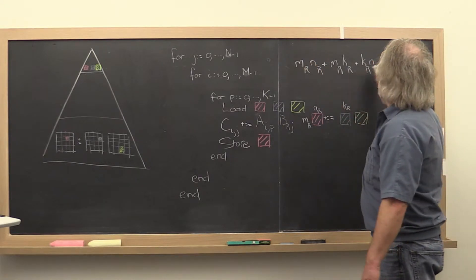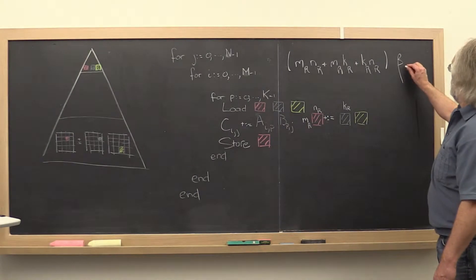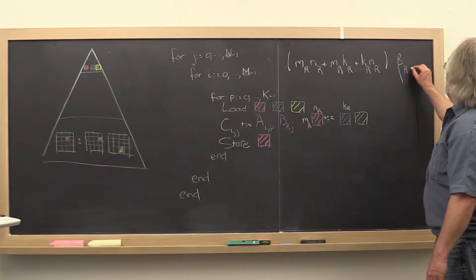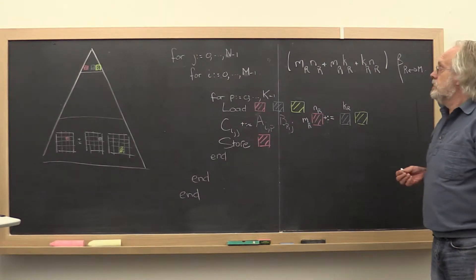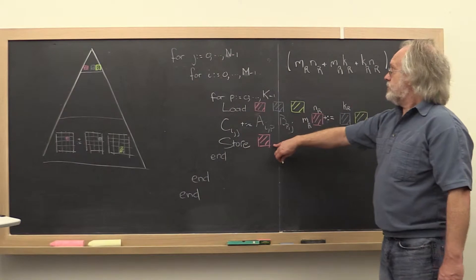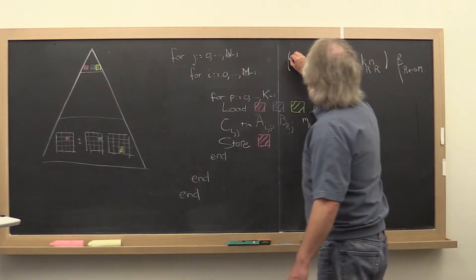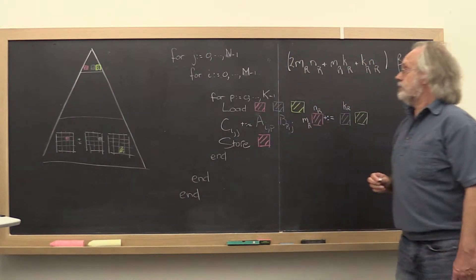And we need to multiply that times the cost of moving one double around. And that's r beta rm. But then we also have to store the block of C. And therefore we need to put a 2 in front of that.